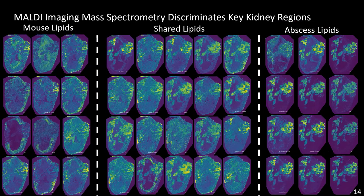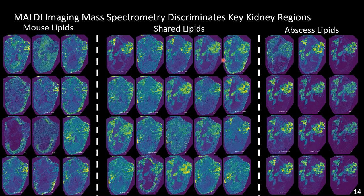Looking at a further subset of about 30 different lipids, some localize to mouse structures within the kidney such as the cortex and medulla. Some are abscess-localized lipids that localize almost exclusively to the abscess — these could be host lipids produced in response to the Staph infection, or lipids produced by the Staph itself. We're doing orthogonal experiments to determine their origin. There are also shared lipids present in both host tissue and the abscess, and because lipids are complicated, some are likely isomers — which we'll separate further using standards and ion mobility mass spectrometry.